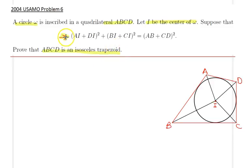The given condition reminds us of Ptolemy's inequality, or in fact in the case of a cyclic quadrilateral, Ptolemy's theorem. But it's not quite right because the circle is inscribed inside the quadrilateral, so in that sense the quadrilateral is not cyclic. So what we need to do is construct a new quadrilateral which will look cyclic.